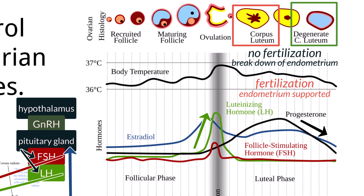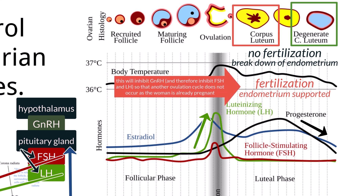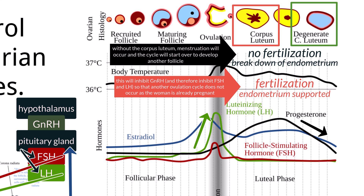The high levels of both estrogen and progesterone will begin a negative feedback loop, signaling to the hypothalamus and inhibiting the production of gonadotrophin-releasing hormones. Without gonadotrophin-releasing hormones, FSH and LH are not produced, which will prevent the production of another Graafian follicle. If there is no pregnancy, the corpus luteum will break down, leading to a decline in progesterone and estrogen, causing the endometrium to break down — menstruation occurs and the cycle begins again.